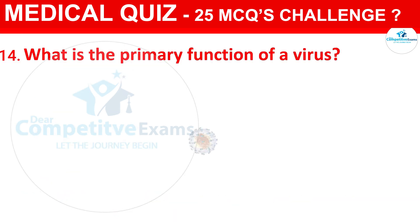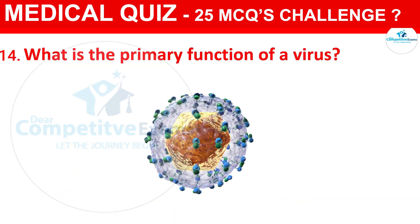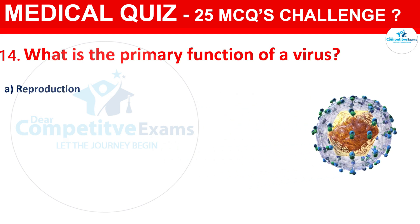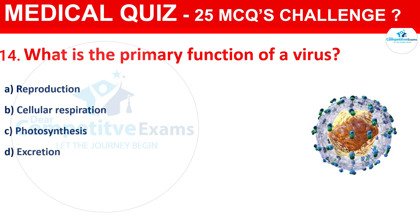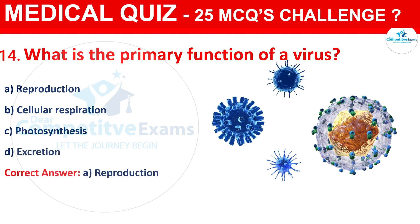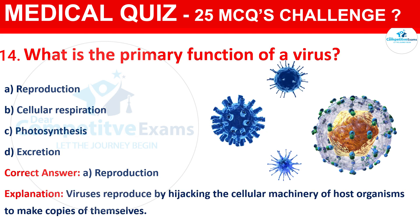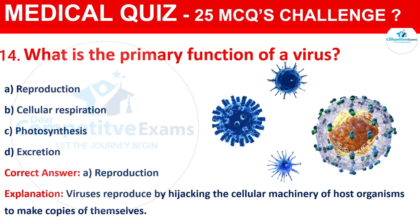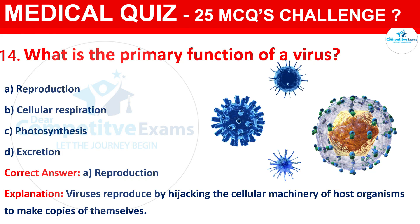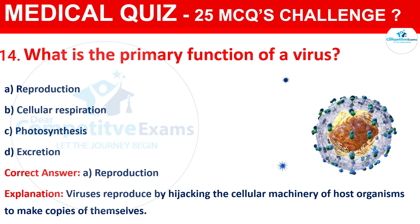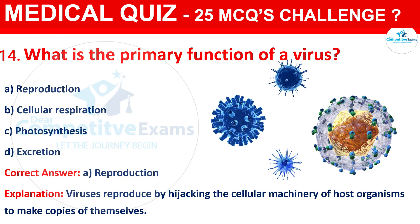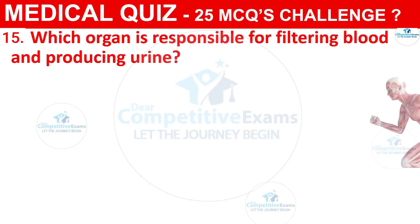Question 14: What is the primary function of a virus? The options are Reproduction, Cellular Respiration, Photosynthesis, or Excretion. The correct answer is A, that is Reproduction. Viruses reproduce by hijacking the cellular machinery of host organisms to make copies of themselves.